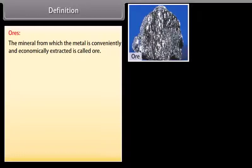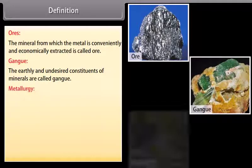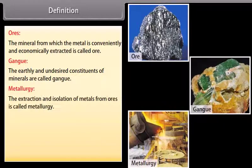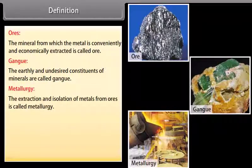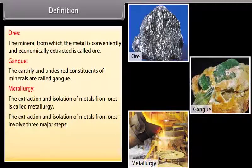Definition. Ores: The mineral from which the metal is conveniently and economically extracted is called ore. Gang: The earthly and undesired constituents of minerals are called gang. Metallurgy: The extraction and isolation of metals from ores is called metallurgy. The extraction and isolation of metals from ores involves three major steps.